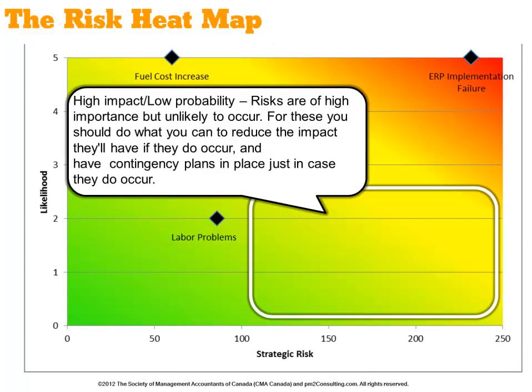Risks in the bottom right corner — those which have a high impact but a low probability — are of high importance, but of course unlikely to occur. For those, you can do what you can to reduce the impact if they do occur, but you're best off just having contingency plans in place. Money invested here may not necessarily pay off, due to the low likelihood of these risks occurring.